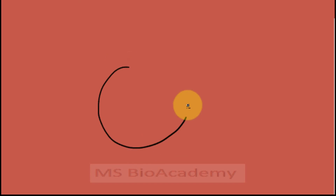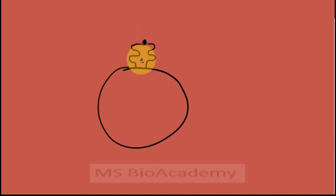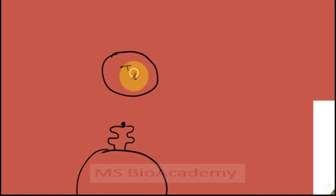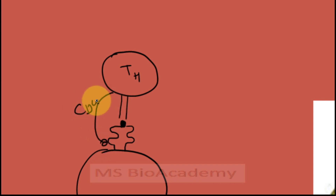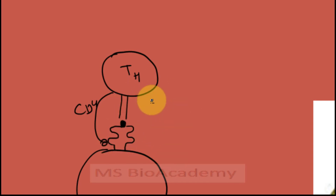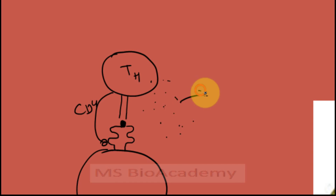Now let's talk about how the interaction with T cells takes place. The moment the MHC class 2 molecule comes to the cell surface with its exogenous peptide, the T helper cells come and their T cell receptor recognizes this peptide, along with the CD4 coreceptor. This interaction — the T cell receptor, the peptide presented by MHC, and the CD4 coreceptor binding to the MHC molecule — gives a signal to the T helper cell, which then gets activated.